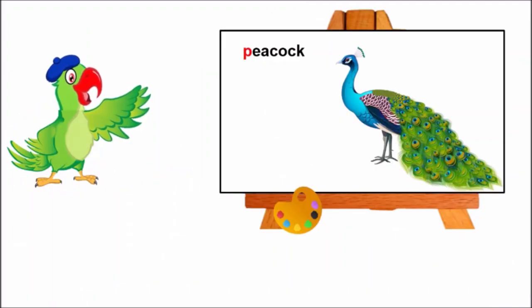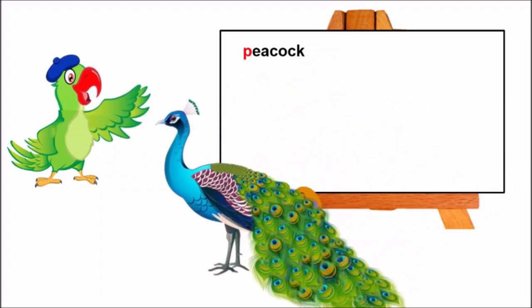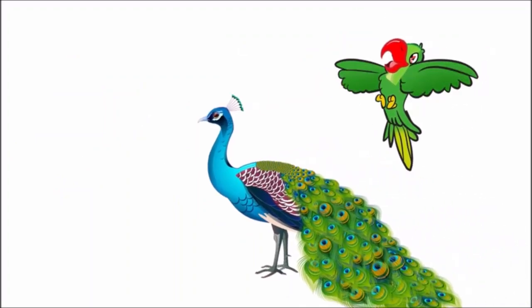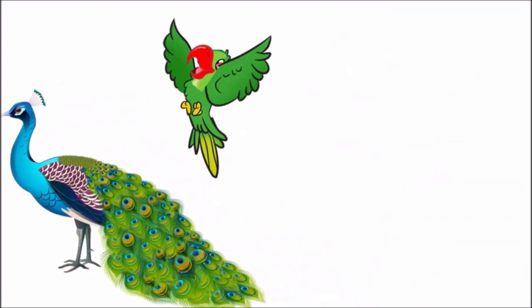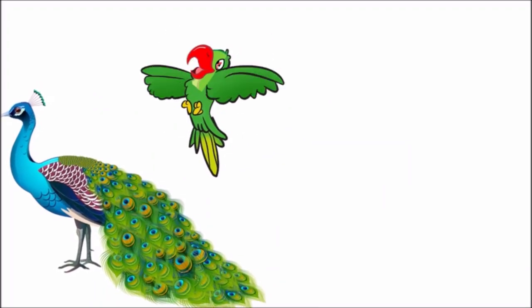I also want to go on a picnic with this peacock. Let me do magic and make it a real peacock. Abracadabra, gilly gilly choo, become a real peacock. Oh look children, the peacock has become real. Now parrot and peacock are going on a picnic together. Hope children, you enjoyed the story of Pinto the parrot.